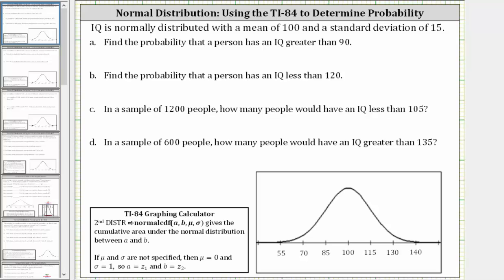IQ is normally distributed with a mean of 100 and a standard deviation of 15. The normal distribution curve is already set up below, with the mean of 100 at the center of the distribution and the horizontal axis scaled by the standard deviation of 15.